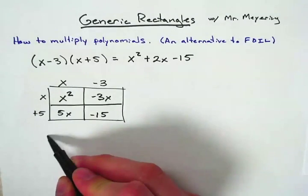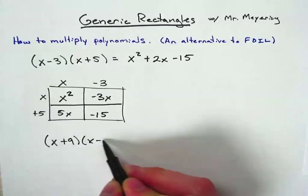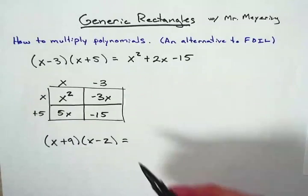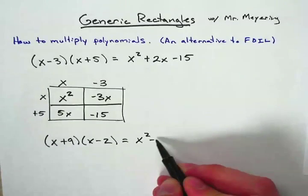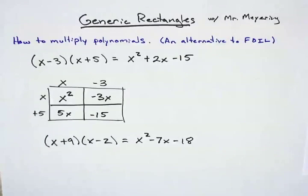If you'd like to try one for yourself, you could try x plus 9 and x minus 2. If you write out the generic rectangle, you should get x squared minus 7x minus 18. Good luck with that, and thanks for listening.